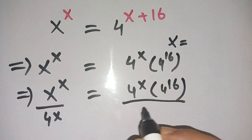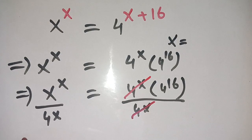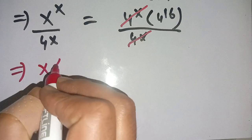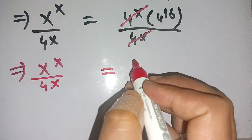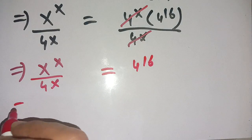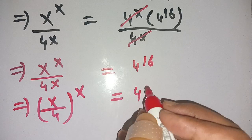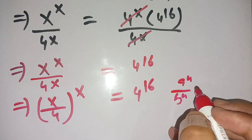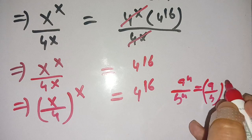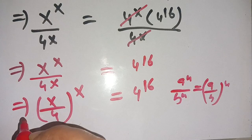Dividing both sides by 4^x, we can cancel out 4^x, and we get x^x divided by 4^x = 4^16. Now we can write this as (x/4)^x = 4^16, using the rule that a^n divided by b^n equals (a/b)^n.